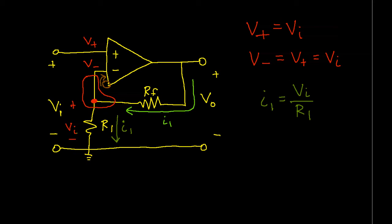If we know that, then we can compute the voltage across RF. Let's call this VF. This is equal to I1 times RF. We know what I1 is, so we can write this as VI times RF over R1.